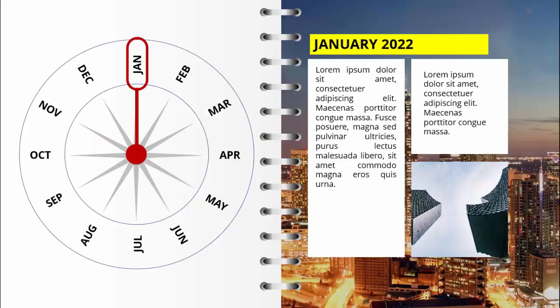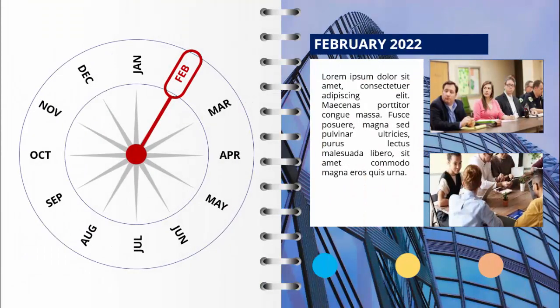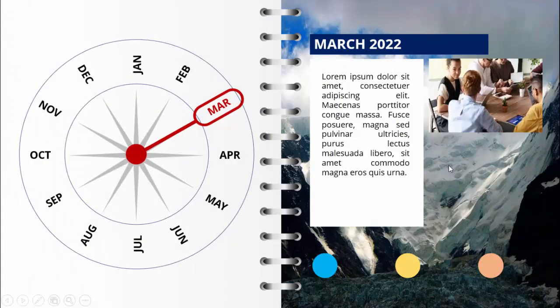Now let me show you how this will look with the page curl transition. Again, this is the very first page — you can see January. When I click, it gives the notebook style and then it turns to the second page which is February, then March. You can do similar for the rest of the months.